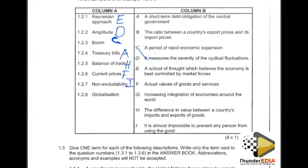For 1.2.8, we have globalization. Globalization is the linkage of different countries coming together to perform a certain activity — for example, countries coming together to celebrate World AIDS Day, to play Olympic games, or for the Soccer World Cup. All of these can be classified as globalization. Our appropriate answer is G: the increasing integration of economies around the world.